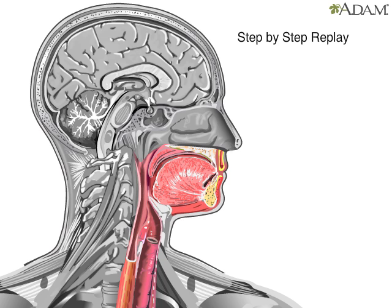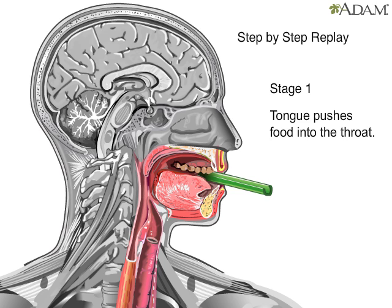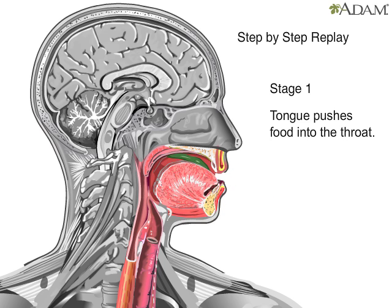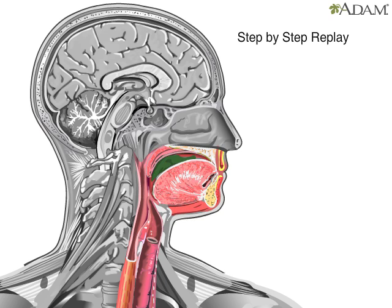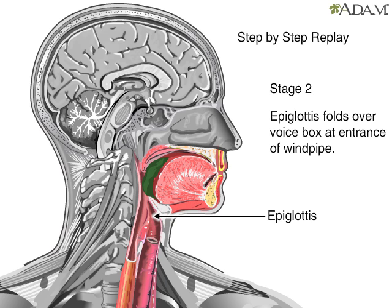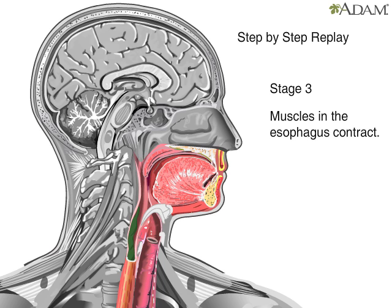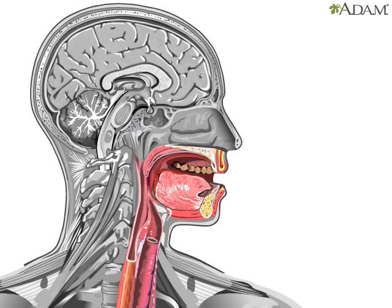Let's watch the swallowing process again. First, the tongue pushes the food into the throat. Next, the epiglottis, a small but important flap of tissue, folds over the voice box at the top of the windpipe. This keeps food from going down the wrong way. Finally, the esophagus contracts and moves food towards the stomach.